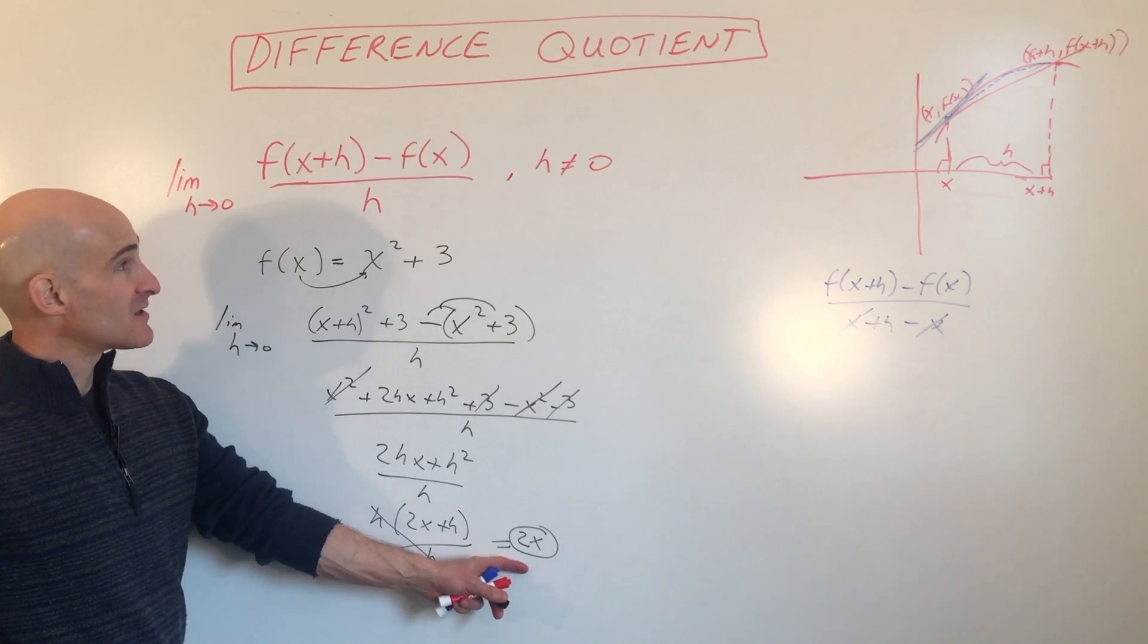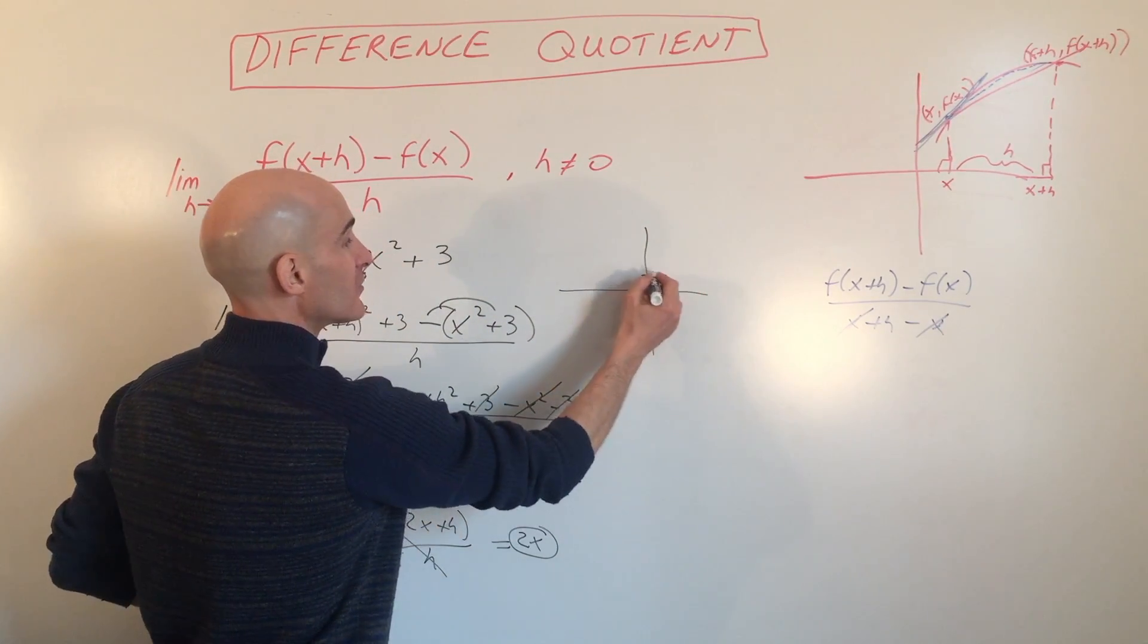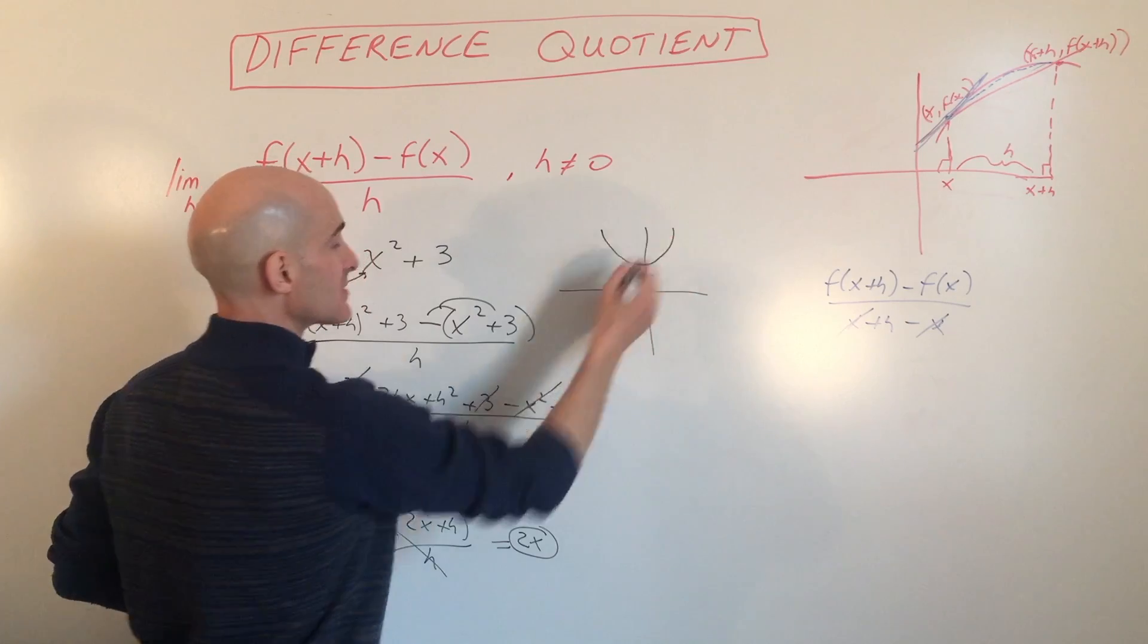So what 2x means is, if we look at this graph, y = x² + 3, it's a parabola like this.